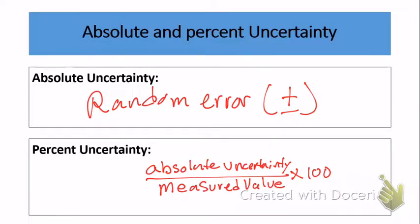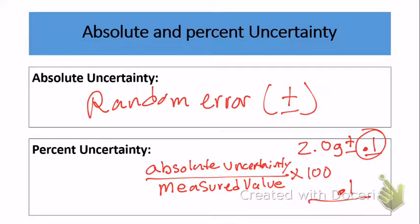For instance, if you have a measured value of 2.0 grams plus or minus 0.1, the 0.1 is the absolute uncertainty — the plus or minus random error. To change it into a percent uncertainty, we simply take the absolute uncertainty of 0.1, divide it by the measured value of 2.0, and multiply by 100. That's not too hard to do.